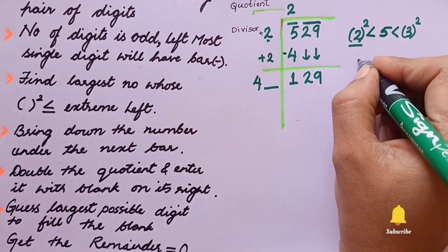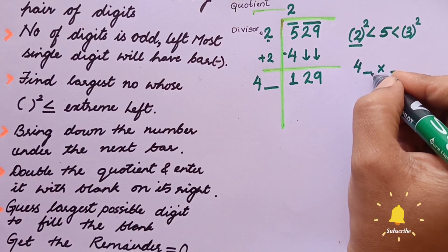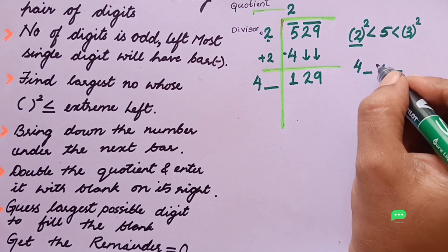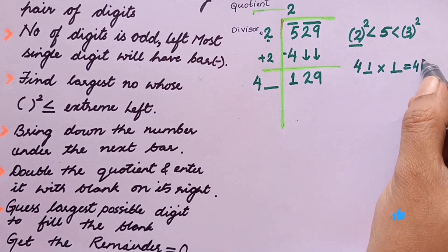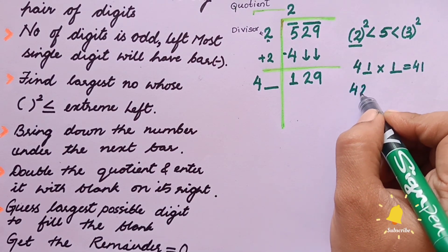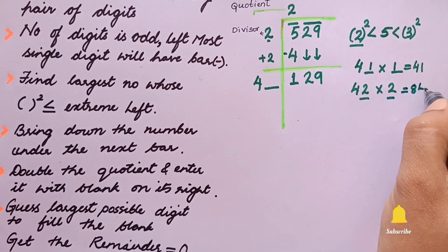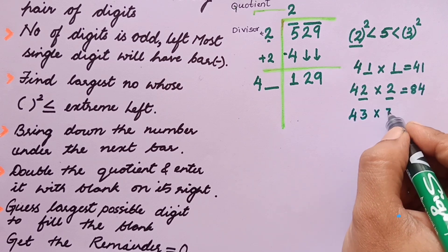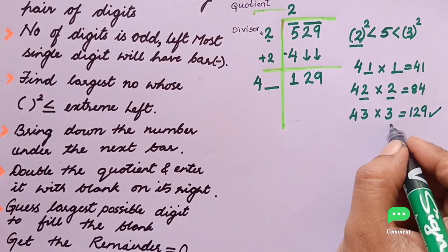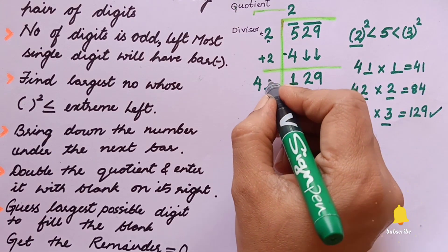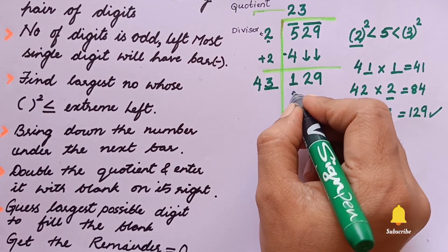Now we need to guess the largest possible digit to fill the blank. Whatever digit we fill in the blank must also be repeated as the multiplier. Trying 1: 41 times 1 is 41 — too small. Trying 2: 42 times 2 is 84. Trying 3: 43 times 3 is 129. That works, so we fill the blank with 3.